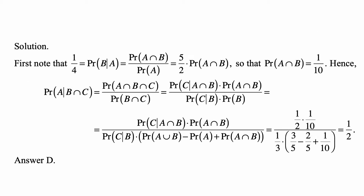Here's the solution. We have probability of B given A equal to one-fourth, which is probability of A intersection B divided by probability of A. Since probability of A equals two-fifths, that gives us five over two times probability of A intersection B, and therefore probability of A intersection B is one-tenth.